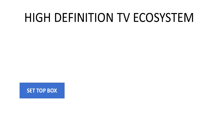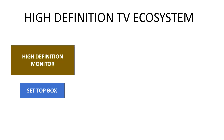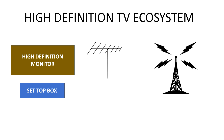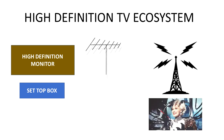Now that we've introduced the set-top box, let's see what the ecosystem looks like. We have the set-top box, we need a monitor, we need an antenna, and that antenna has to receive radio waves from a broadcaster.